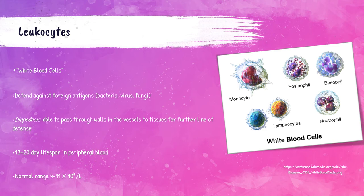Normal adults should have from around 4 to 11 × 10⁹ per liter of white blood cells. Remember these are present in the buffy coat in the spun-down blood sample — if a patient has less than the reference range, the buffy coat is going to be very small; if they have a higher-than-normal count, the buffy coat is going to be larger than normal.